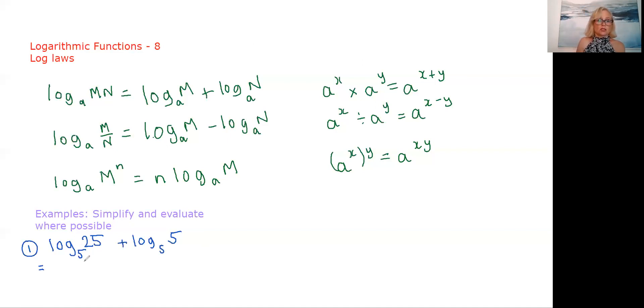All right, let's just check first of all, do we have the same base? Yes we do. We're adding logs with the same base. So using our first rule, this rule here works both ways. You can either split it up like this or go back the other way. We're going to go back the other way. If we're adding logs with the same base, we're going to multiply the powers.